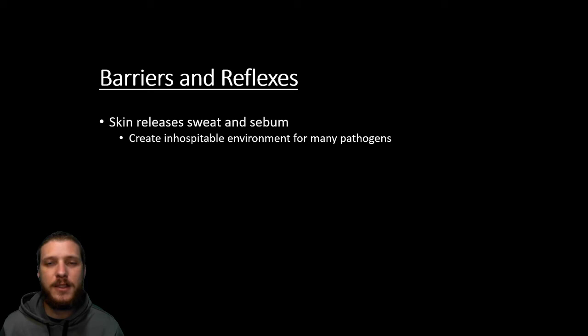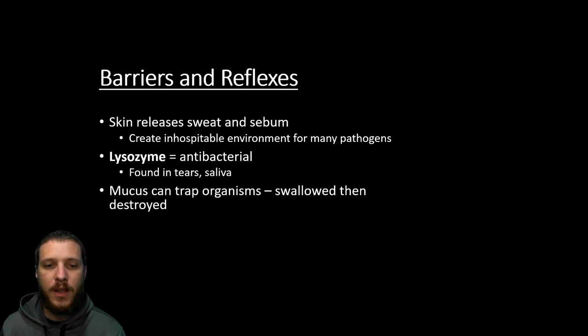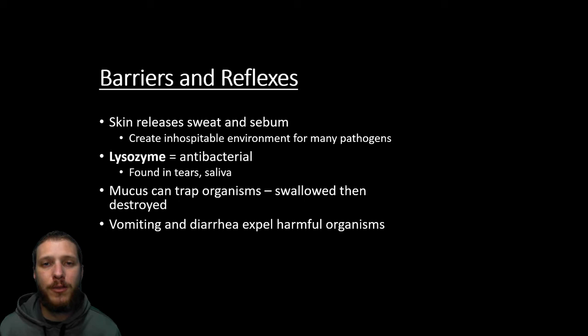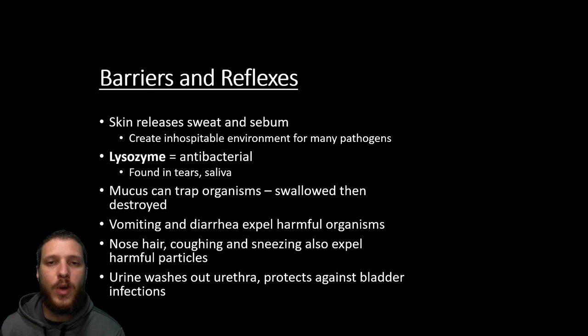Skin has sweat, oil, and sebum to create an inhospitable environment for pathogens. Enzymes called lysozymes — found in tears and saliva — are antibacterial. Mucus traps organisms which are swallowed and destroyed in the stomach or spat out. Vomiting and diarrhea quickly expel harmful organisms — for example, food poisoning causes vomiting if the toxin is still in the upper digestive system, or diarrhea if it has moved further down. Nose hairs, ear hair, coughing, and sneezing also expel harmful particles from the respiratory tract. Urine washes out the urethra to protect against bladder infections.